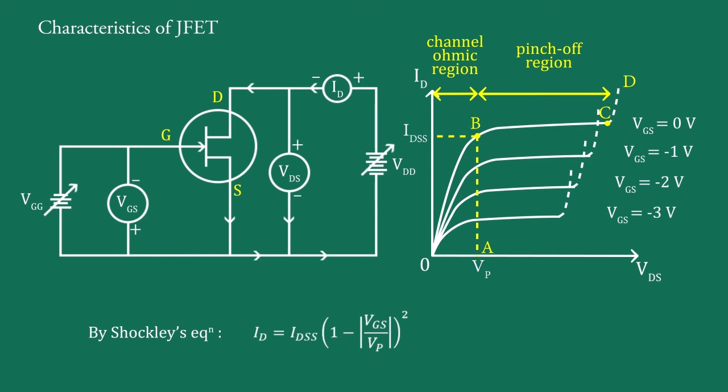Therefore, drain current ID is now written as ID equals IDSS times (1 minus VGS upon VGS(off)) whole raised to 2.